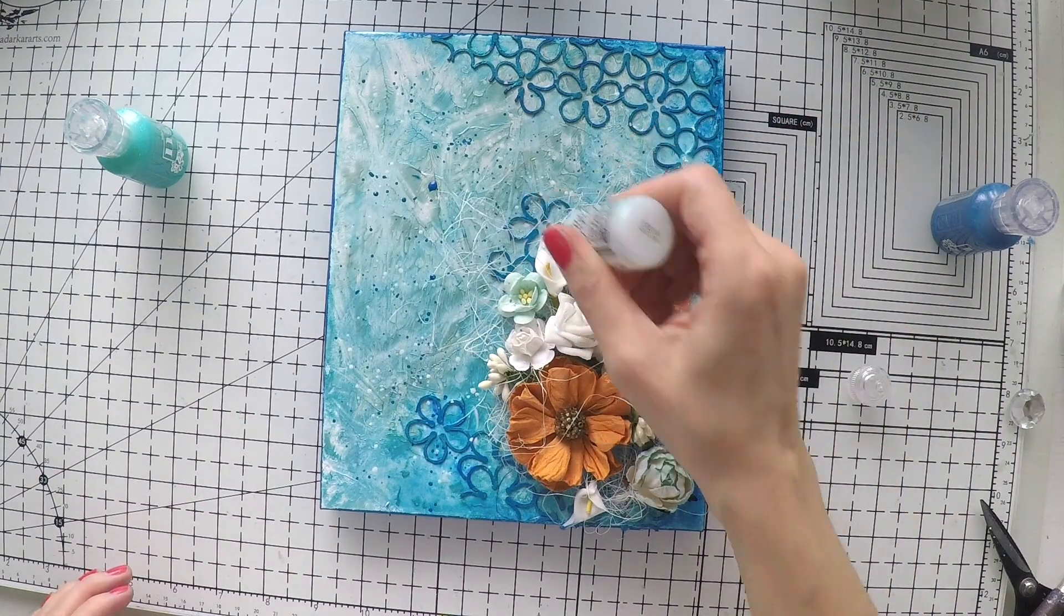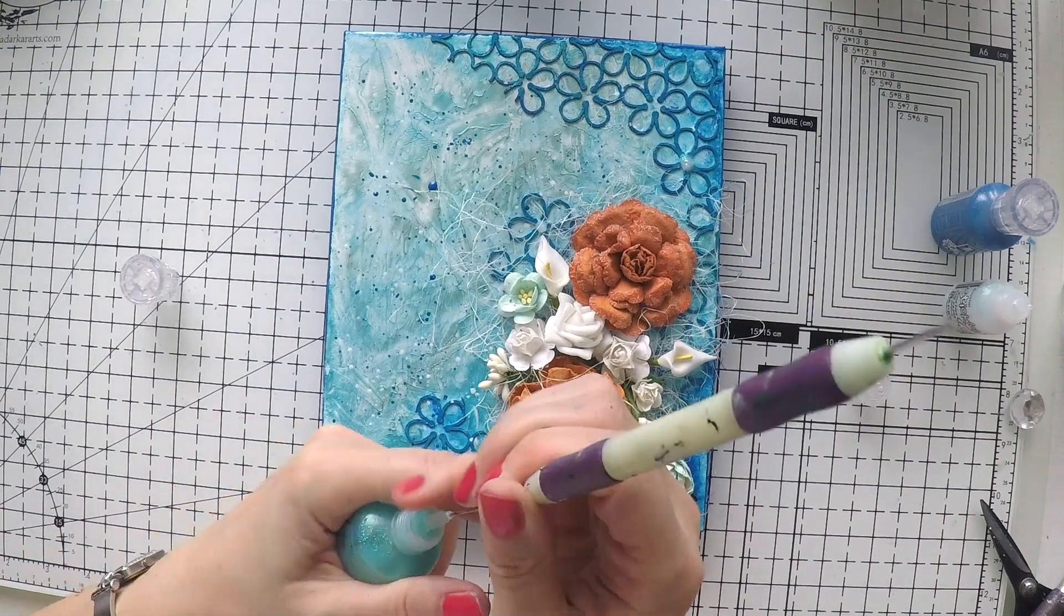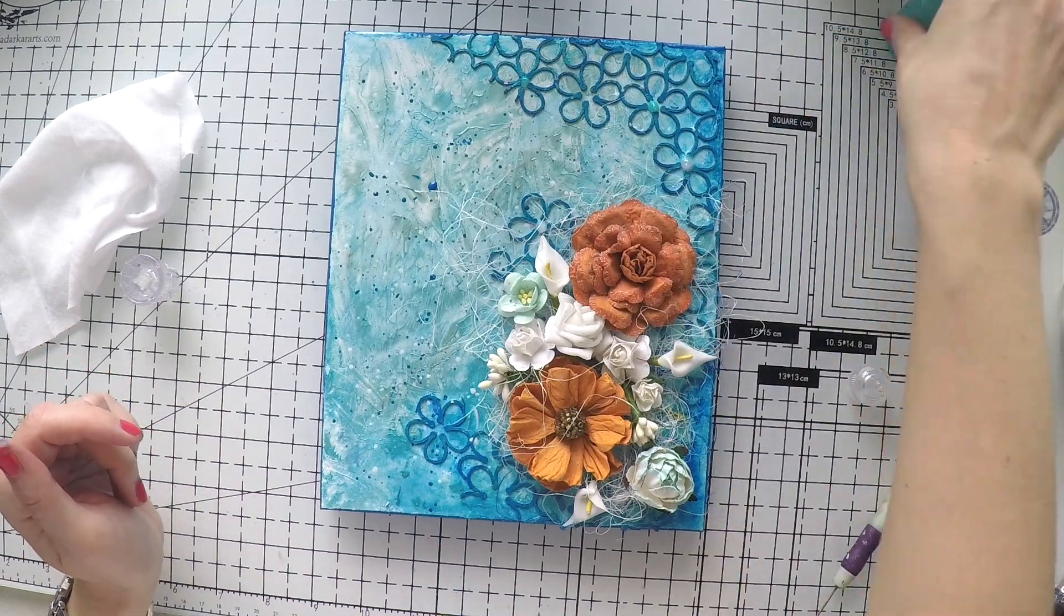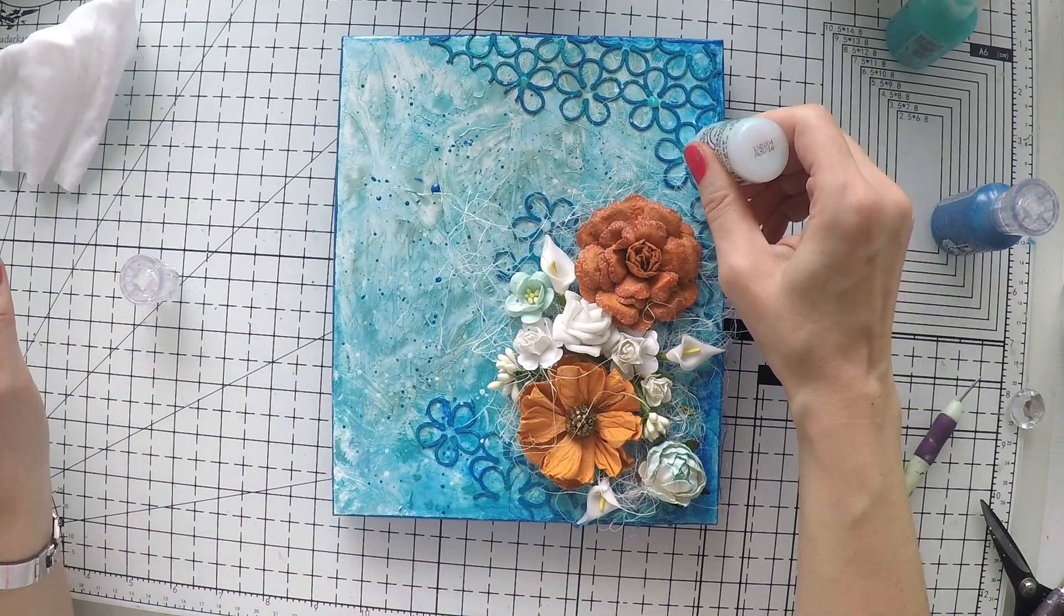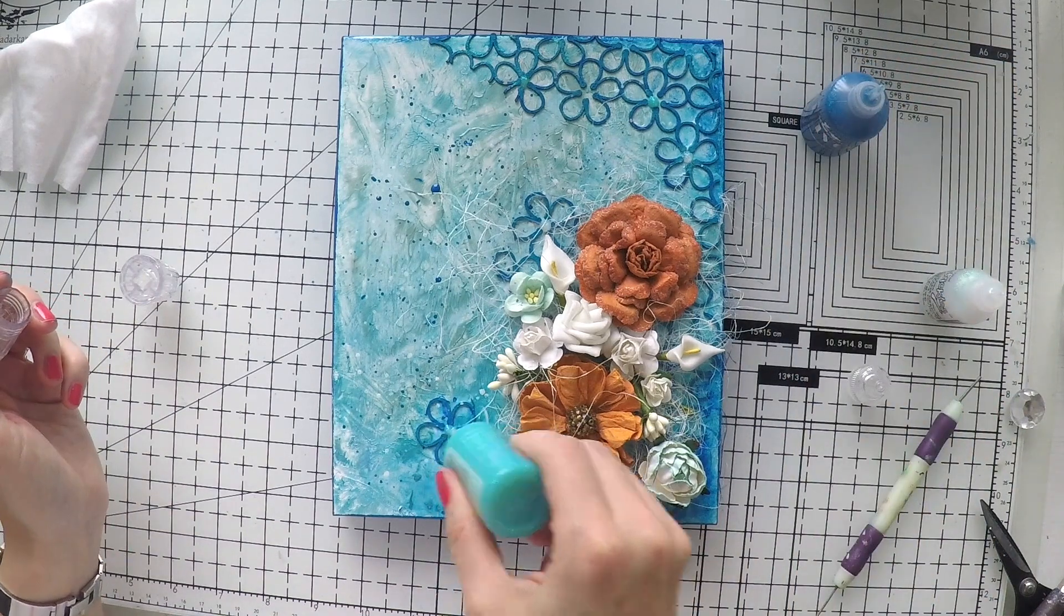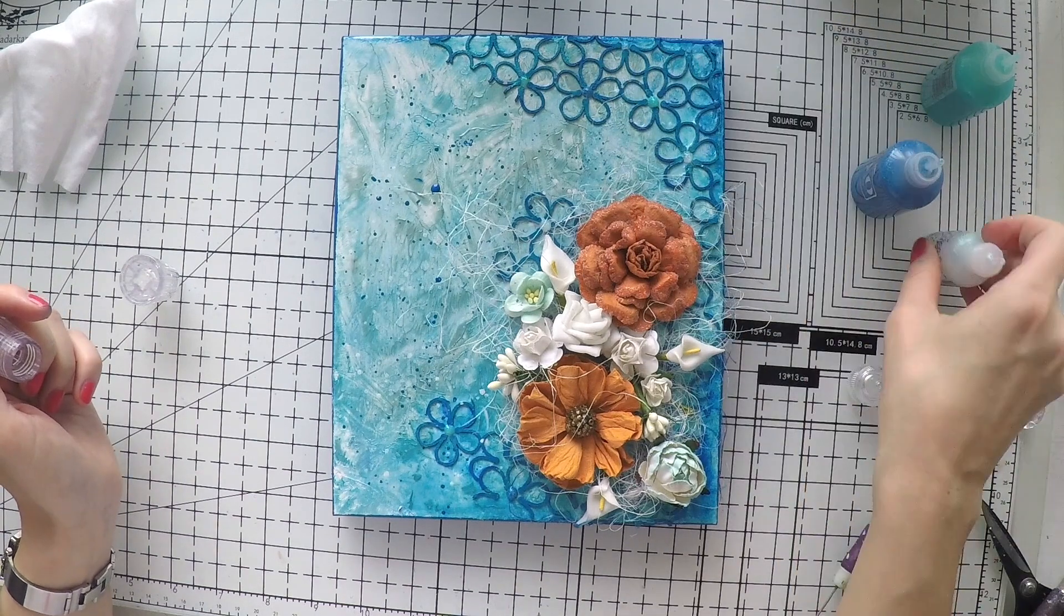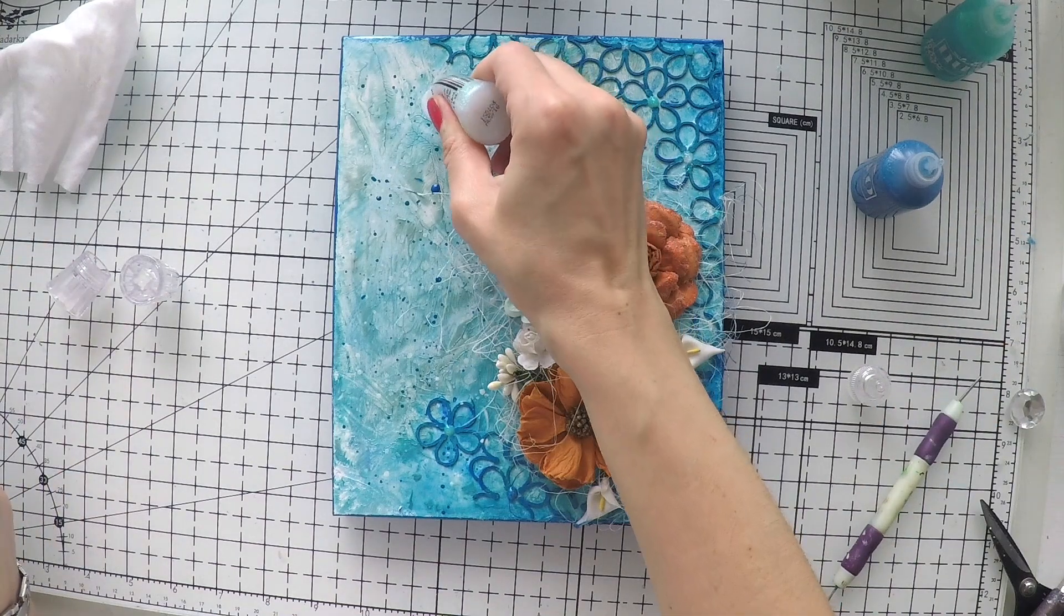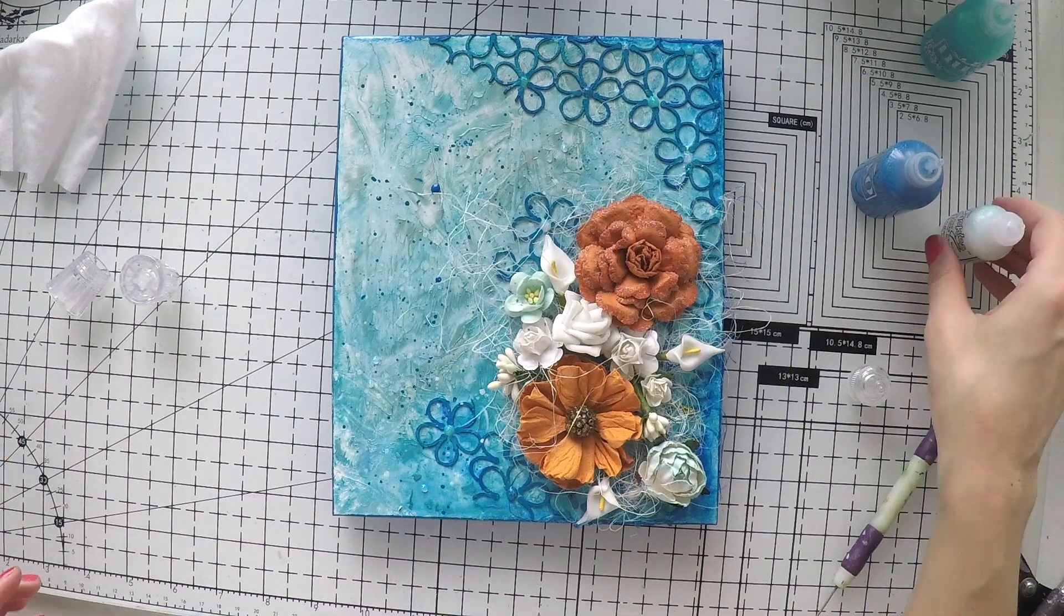I have stickles in crystal color so it's transparent, and also Nuvo glitter glue in glitter drops in turquoise color and dark blue color. So I am just filling the center of these flowers with these three colors to add some fun and interest in the project as well. I love adding these details and I love these stickles and glitter drops. They are so much fun to use.